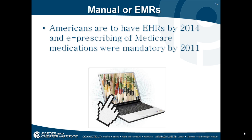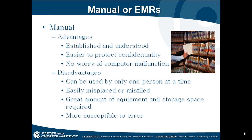Manual or electronic medical records. Some advantages of manual record keeping are that they are established and understood, they can be easy to protect confidentiality, and there are no worries of computer malfunctions. However, some disadvantages are that they can be used only by one person at a time, they are easily misplaced or misfiled, it takes quite some time to locate misplaced or misfiled records, a great amount of equipment and storage space is required, and they are more susceptible to errors.